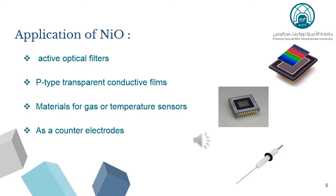Nickel oxide can be used in many applications, such as in micro-batteries, electrochromic coatings, active optical filters, and as a material for gas or temperature sensors, or as a counter-electrode.